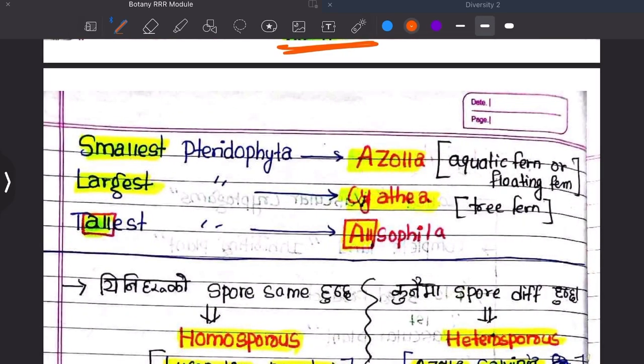The smallest is A, largest is L, longest is L, and the tallest is L.